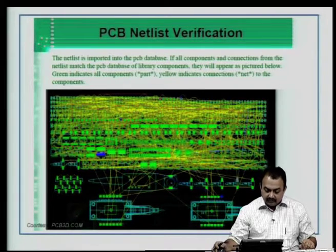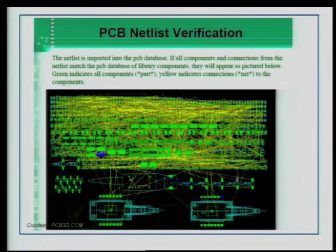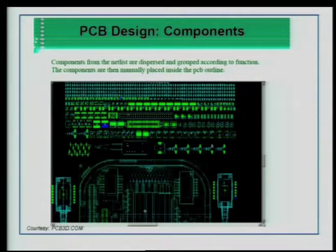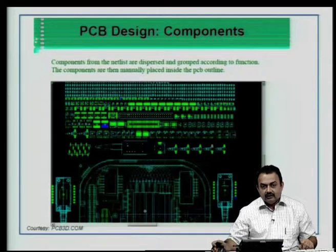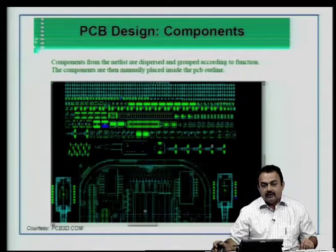Then you do a net list verification. As you can see in this figure, there is what is known as the Ratsnest — components are placed on the screen in the layout module with the connections. The yellow lines are the net list connections. This is typically a medium-dense or high-dense design. You can switch off the net in your software package and look at the total number of components and the footprint details used in your design.